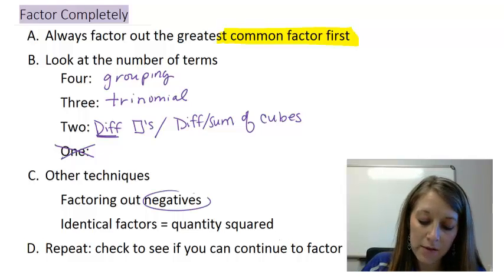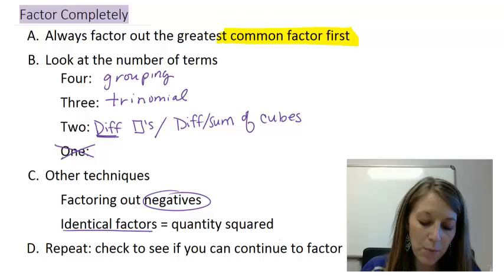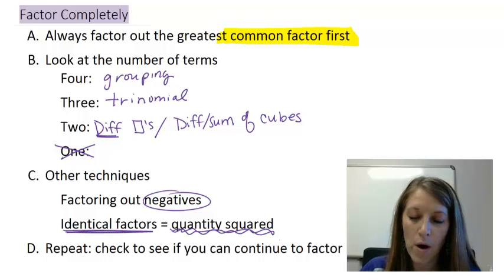If there's any negatives with our leading terms I suggest that you factor it out. It makes the rest of the process easier. And if you end up with two identical factors then you should condense them to something quantity squared.